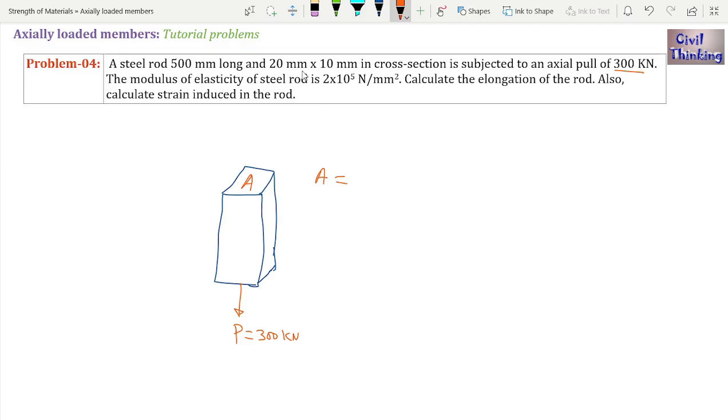Let us assume it's fixed here and the cross section, let the cross section be A. Now the cross section A is how much? 20 millimeter multiplied by 10 millimeter. It is 200 millimeter square. Now the initial length, steel rod 500 millimeter long. The initial length of this rod, let it be L, is 500 millimeter. This is initial length.